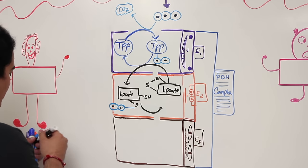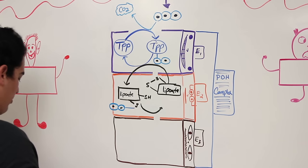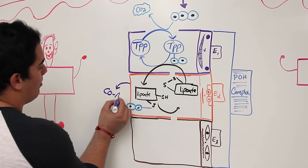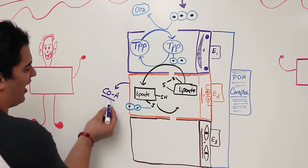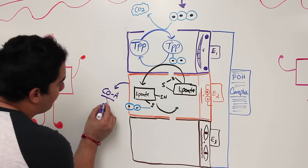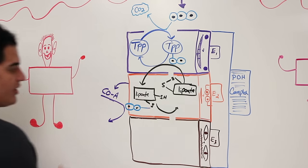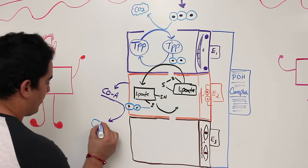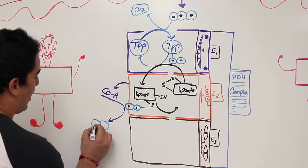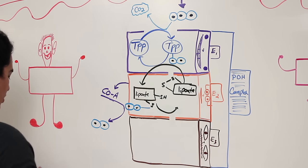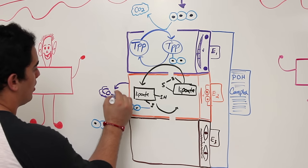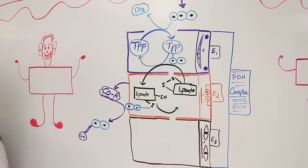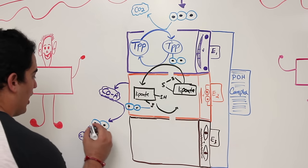On this enzyme there's also a coenzyme A — a derivative of vitamin B5, pantothenic acid. Coenzyme A reacts with the acetyl group on lipoate, and the result is acetyl-CoA: the two-carbon fragment attached to CoA.